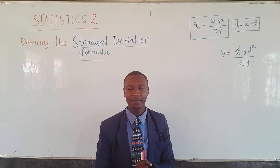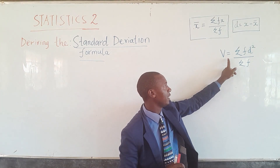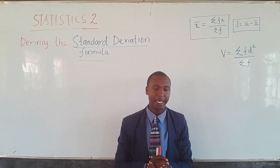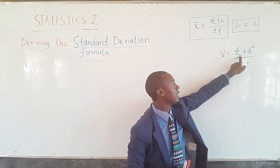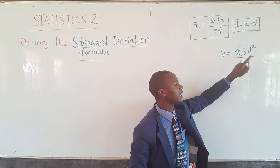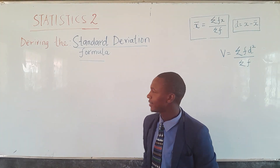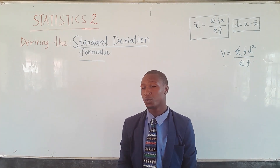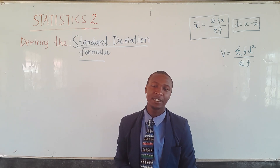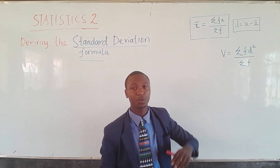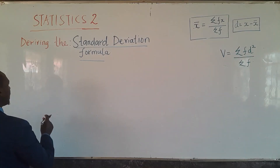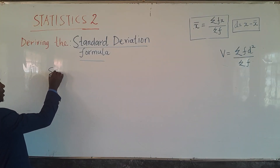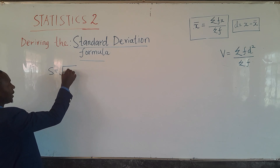We must also have the formula where V, representing the variance, equals summation of fd² divided by summation of f. With that, we are now ready to derive the standard deviation formula using these three relationships. To find the standard deviation, you take the square root of the variance.